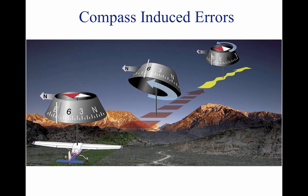A mnemonic or memory jogger for the effect of acceleration error is the word ANDS: Acceleration North, Deceleration South. Acceleration causes an indication toward north; deceleration causes an indication toward south. Oscillation is a combination of all of the other errors, and it results in the compass card swinging back and forth around the heading being flown. When setting the gyroscopic heading indicator to agree with the magnetic compass, use the average indication between the swings.